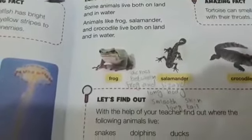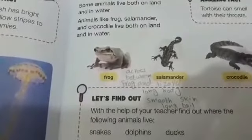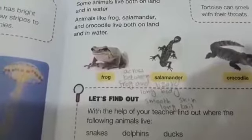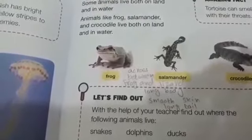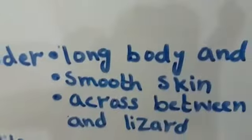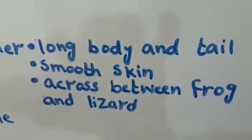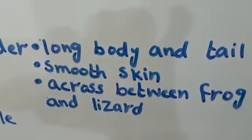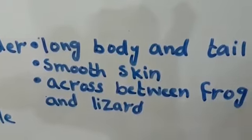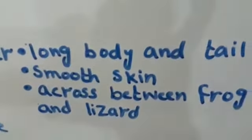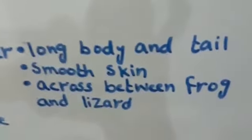You know about the frog. The next one is salamander. The salamander has a long body and long tail, smooth skin, and it is a cross between a frog and a lizard. You can see the picture clearly.